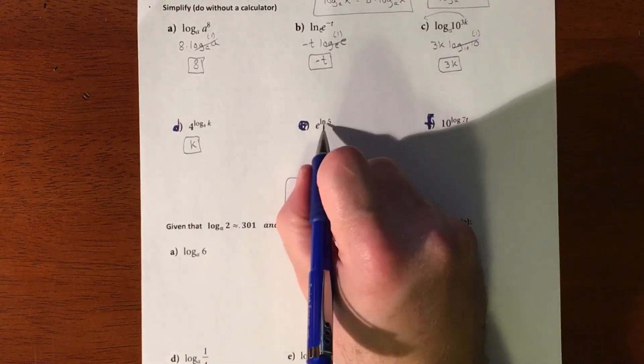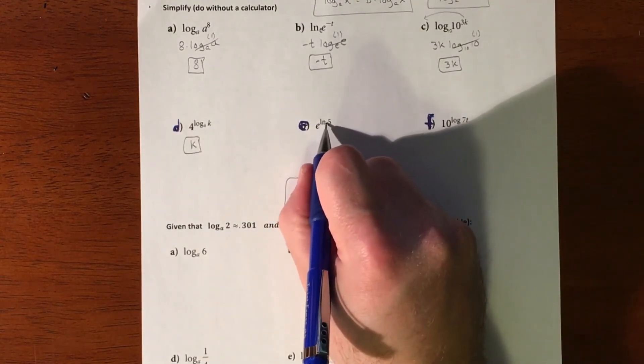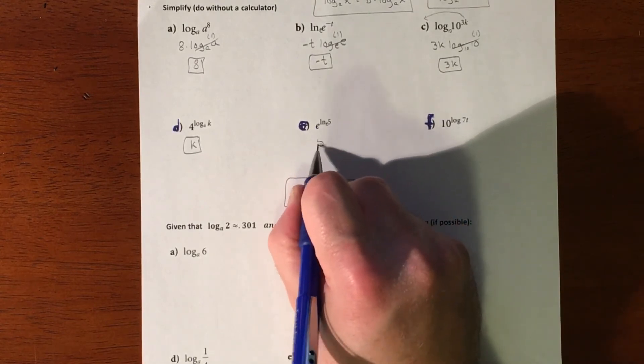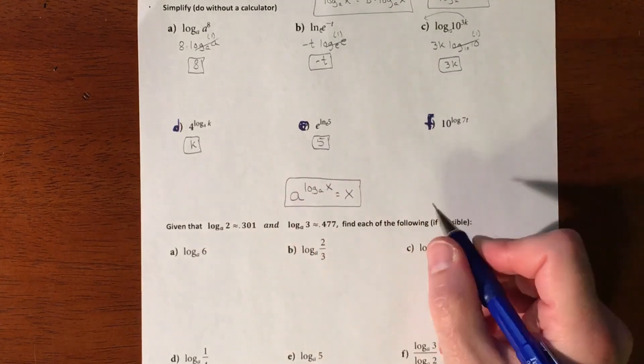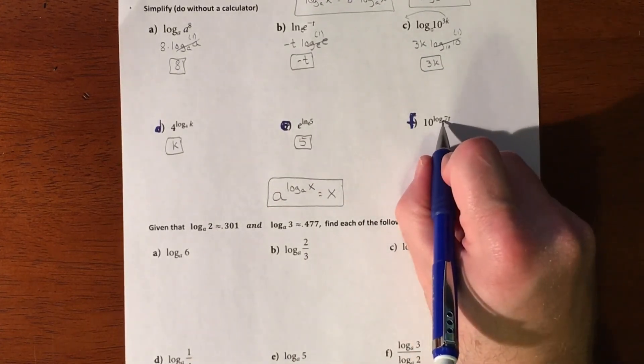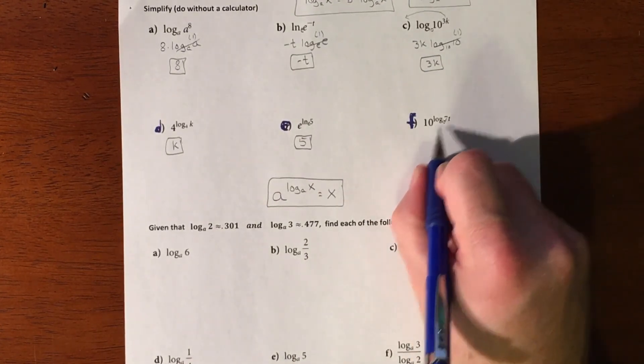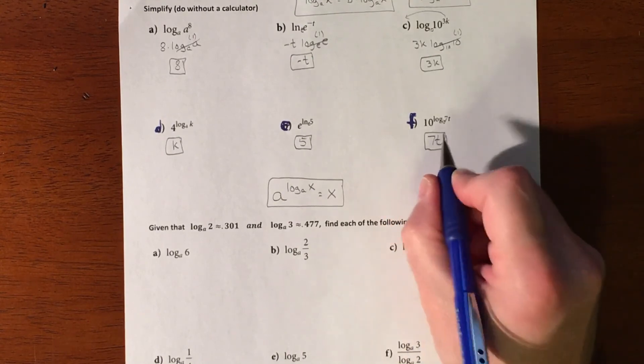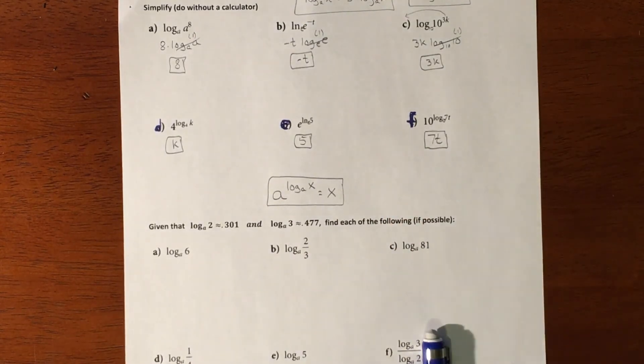And then here, the natural log again is an e, so the fact that those two match, not a coincidence, that's just going to be a 5. And then don't forget here that that is a base 10, so it's just a 7t.